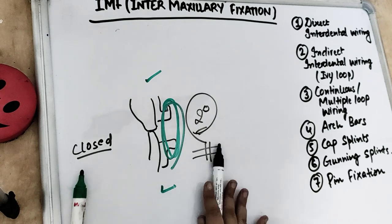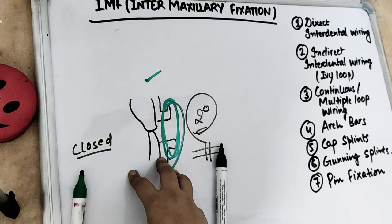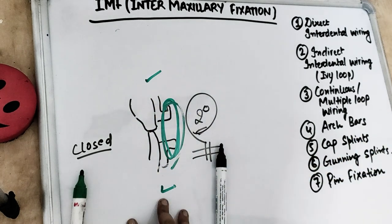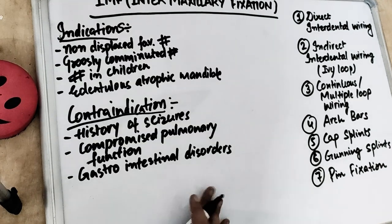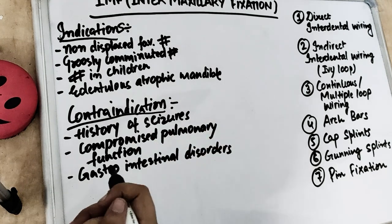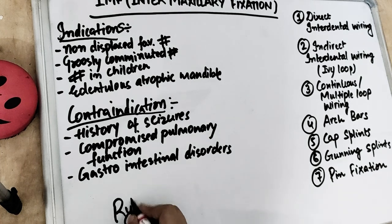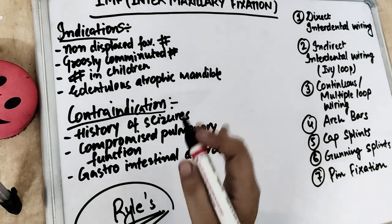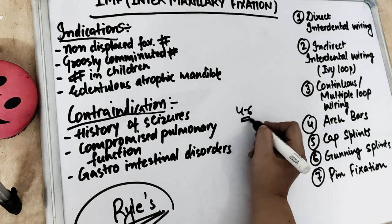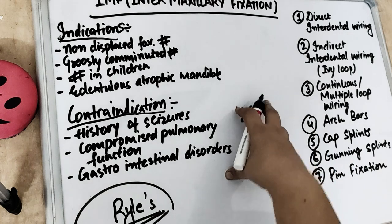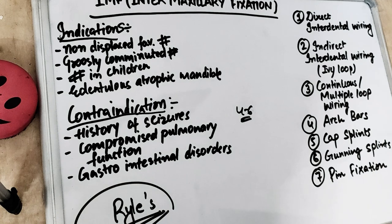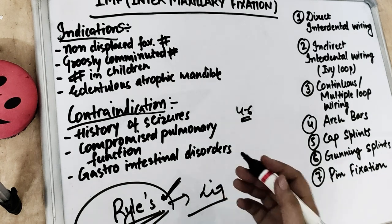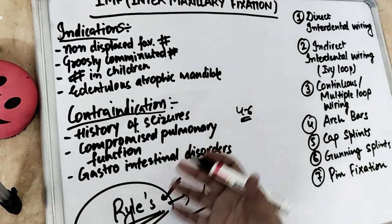Intermaxillary fixation is basically a technique used to fix the fracture segments, to fix the maxilla to the mandible, by reducing to its position by means of wire placed all around the teeth — which we call interdental wiring. The question which comes to mind is: how does the patient eat when the jaws are wired shut? We have to do the Ryle's tube. The patient is on Ryle's tube and basically on liquid diet. For closed reduction, the intermaxillary fixation is going to be four to six weeks of time — almost around a month. So either the patient eats from the Ryle's tube or through a straw from the side on a liquid diet.